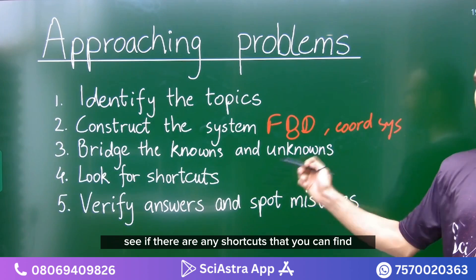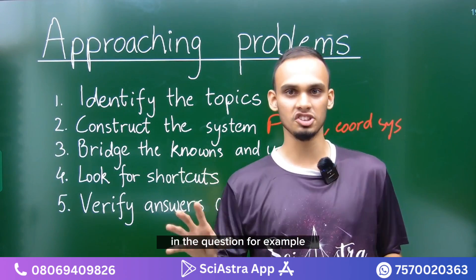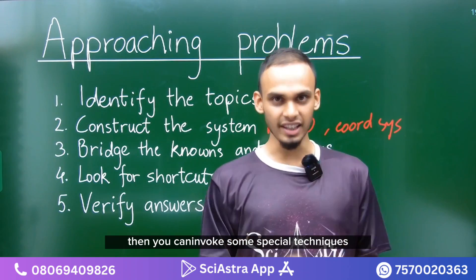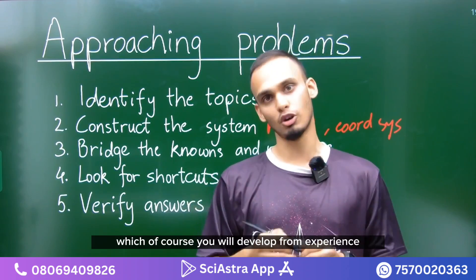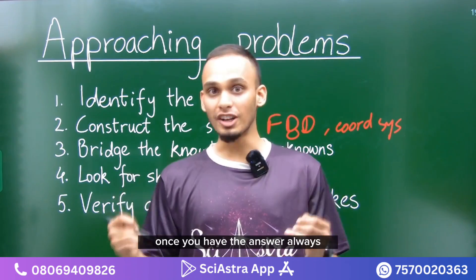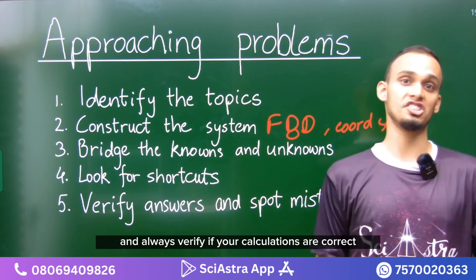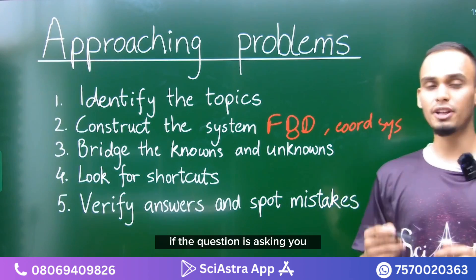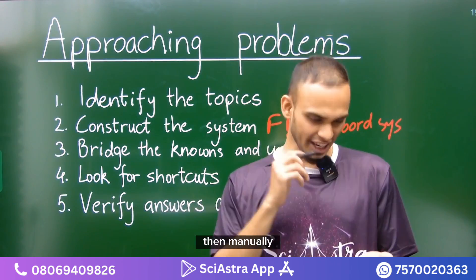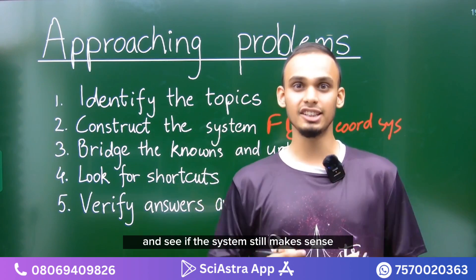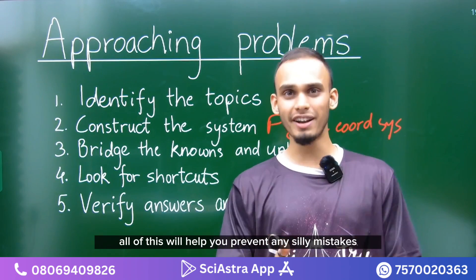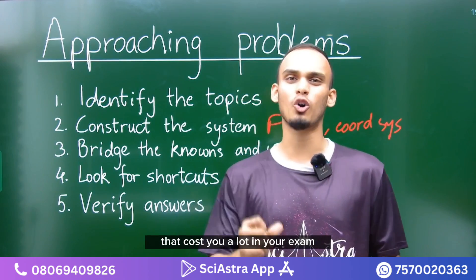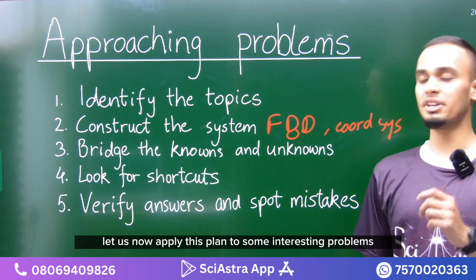Next, look for shortcuts — if the question has symmetry, or asks for maximum or minimum values, you can invoke special techniques that you develop from experience. Finally, always verify your calculations. Rewind your work and check for mathematical mistakes or logical fallacies. For example, if the question asks for maximum velocity, manually test a value greater than your answer to see if the system still makes sense. This prevents silly mistakes that can cost you dearly in the exam.